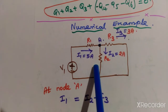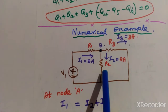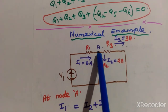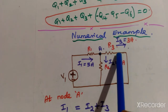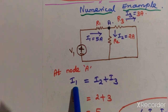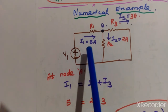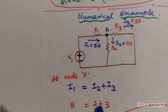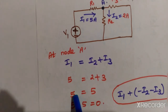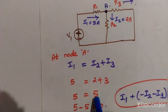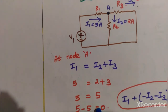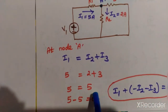Let us see a numerical example. Consider a circuit with voltage source B and three resistors R1, R2, R3. Assume i1 is 5 amps entering node A, and i2 is 2 amps and i3 is 3 amps both leaving the node. According to KCL, current entering equals current leaving: 5 amps equals 2 plus 3 equals 5 amps. So 5 minus 5 equals zero, confirming KCL.